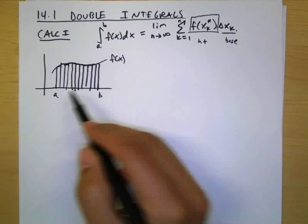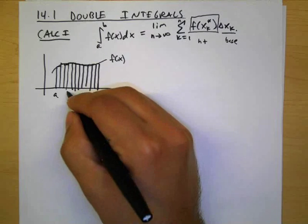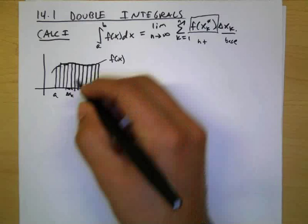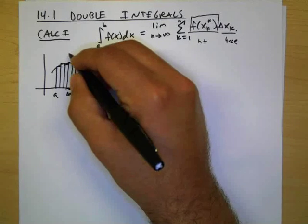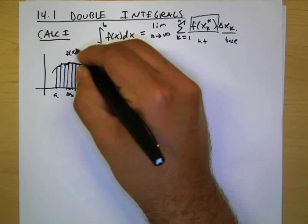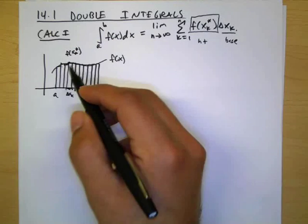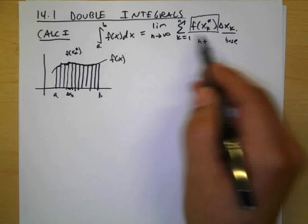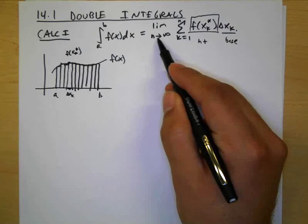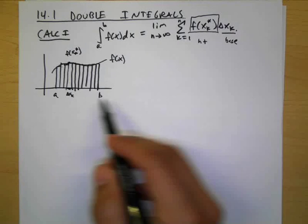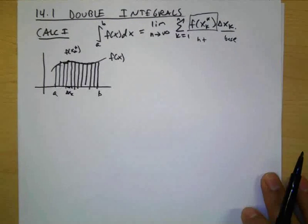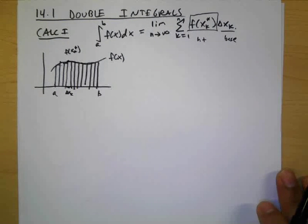So the width is delta x sub k. That would be one of these. And then whatever endpoint you're using, that would be your f of x sub k star. And when you sum all the areas of the rectangles, as you decrease the width and make the width as tiny as possible, which is what this means, you get the actual area under the curve.